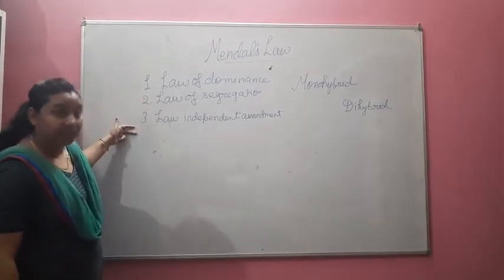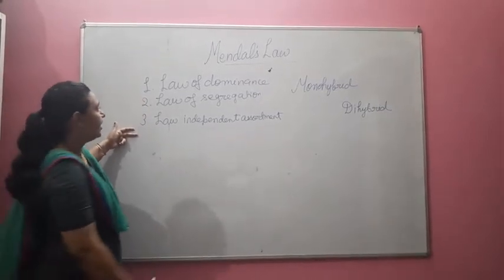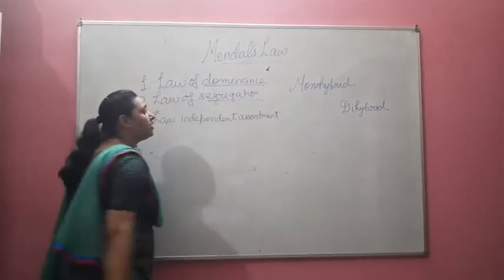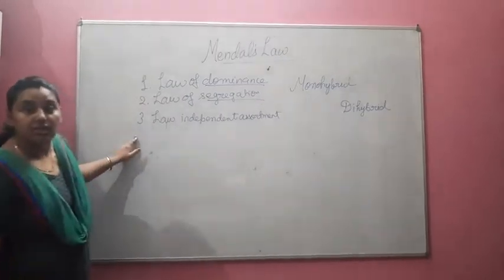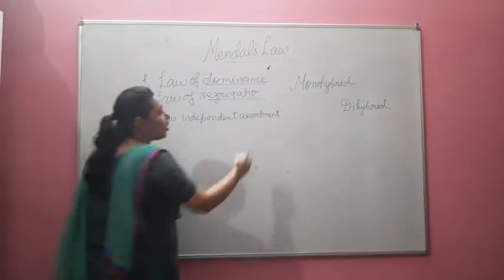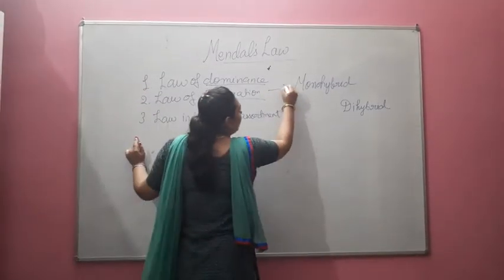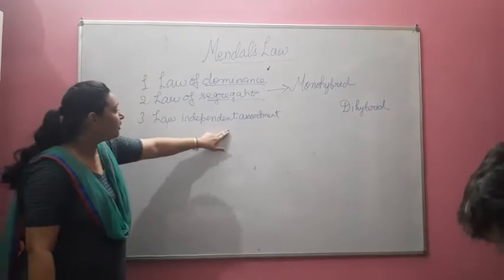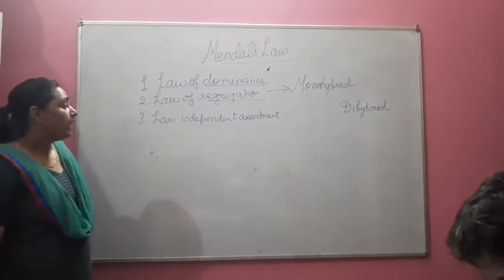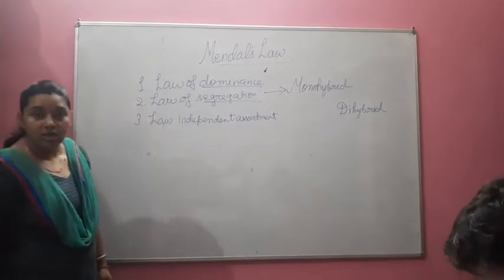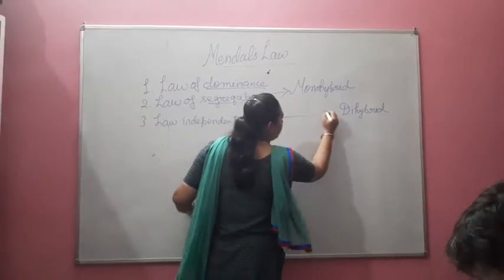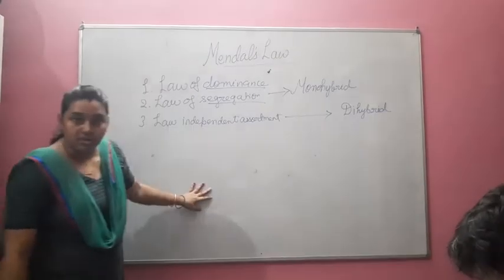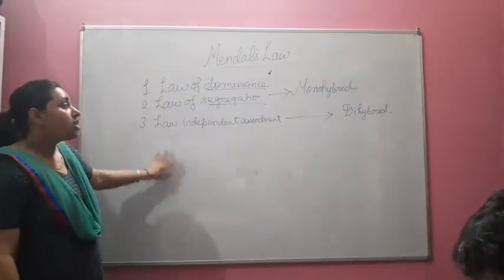Out of these three laws, the Law of Dominance and the Law of Segregation are based on mono-hybrid cross. And the third one, the Law of Independent Assortment, is based on the di-hybrid cross.